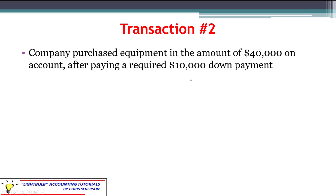Transaction number two: the company purchased equipment in the amount of $40,000 on account after paying a required $10,000 down payment. The phrase 'on account' means cash is not being paid for that particular portion. Instead, it's going to be set up in either an accounts payable or a notes payable, depending on the situation. The $10,000 down payment will be cash going out.